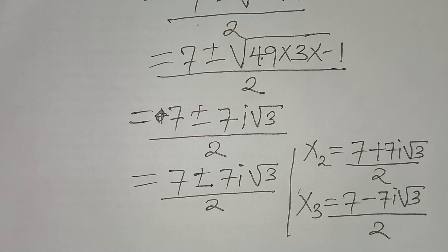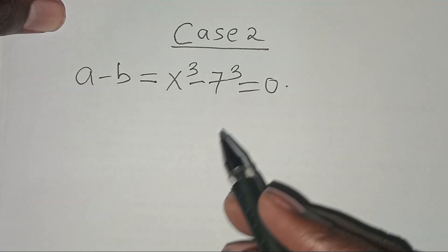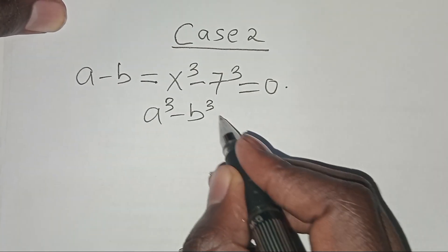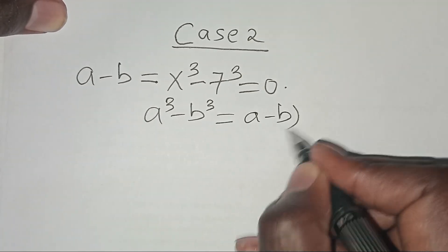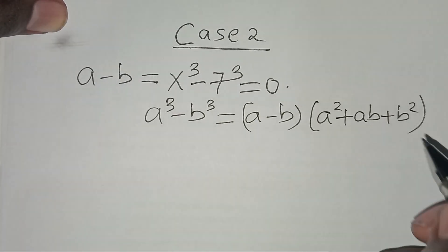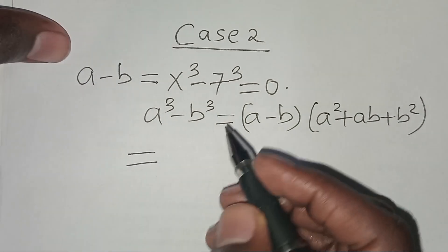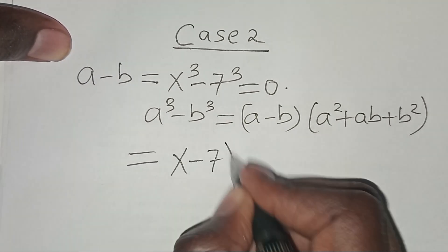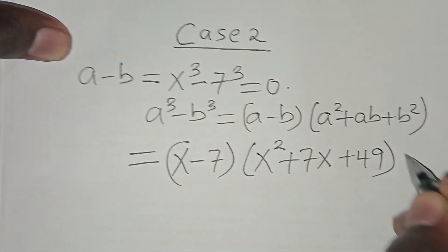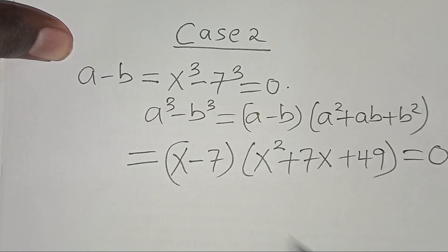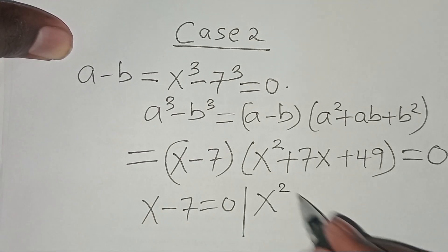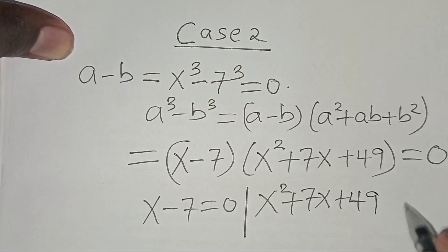Now let's solve case 2: x to the power 3 minus 7 to the power 3 = 0. This is the difference of two cubes, in the form a³ - b³ = (a - b)(a² + ab + b²). Applying this: (x - 7)(x² + 7x + 49) = 0. The first part gives x₄ = 7. The second part is the quadratic x² + 7x + 49 = 0.